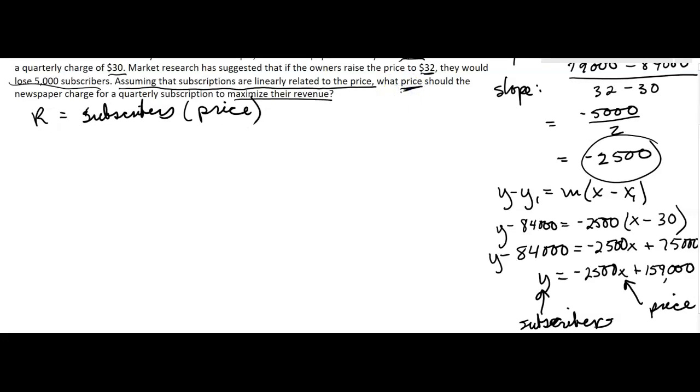We're trying to find the price, so we need this in terms of price, which I have established as x. Why can I say that? It's right over here. I said x was my price and y was my subscribers. I probably should use p for price and s for subscribers, but I didn't.